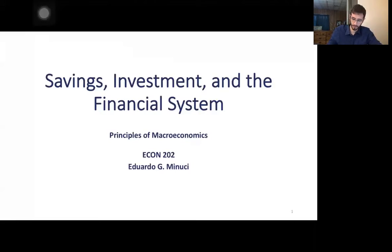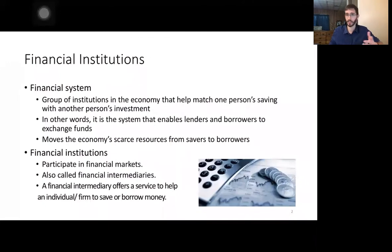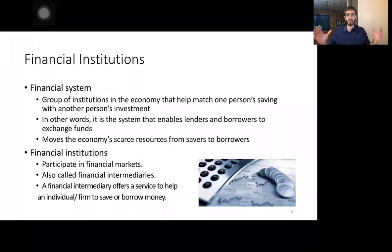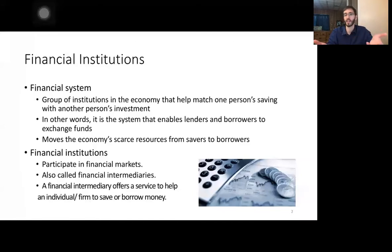I'm using my iPad to take notes and work as a whiteboard, and I'll zoom in and out as needed. So, what is the financial system? The financial system is nothing more than a system where financial markets take place — places where financial institutions operate. A financial institution can be thought of as a financial intermediary, a middleman.